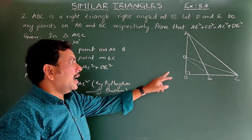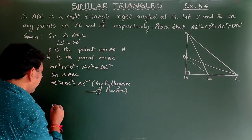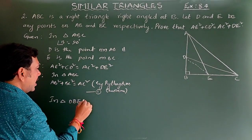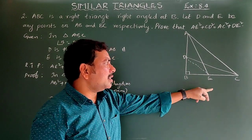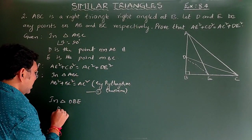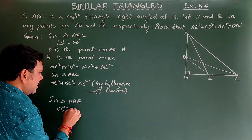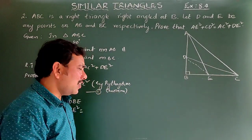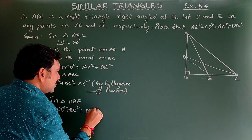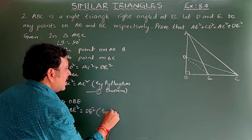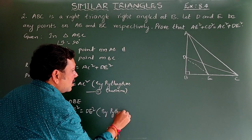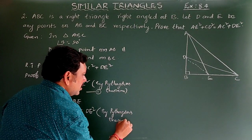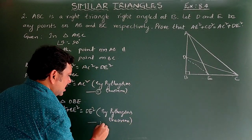In the same way, in triangle DBE, DB² + BE² = DE² — also by Pythagoras theorem. This is equation number 2.